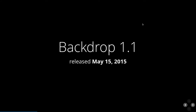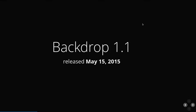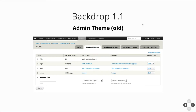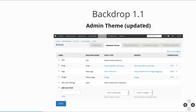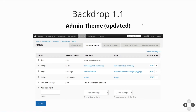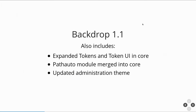Four months later in May, time to practice what we preach and come out with a new version. Backdrop 1.1 changed the look of the administration theme — we used this theme called Seven but now it looks different, with bigger font and bigger links so they work with your finger on a phone or tablet, everything responsive, a bunch of usability improvements. We wanted it to feel different from Drupal. We also added more tokens, a token user interface, Path Auto, and other minor things.